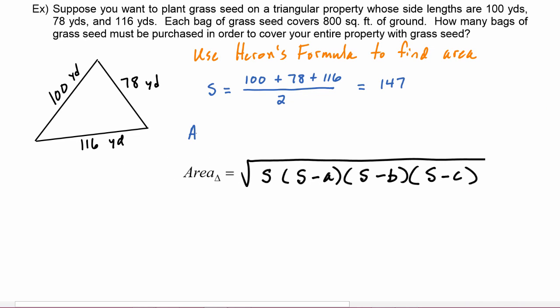Now to find the area of the triangle we will take the square root of the product of those four numbers. So remember we have to take S which is 147, and then we have to take that times S subtracted by each of the sides. So we will do 147 minus 100 and multiply that times 147 minus 78 and multiply that by 147 minus 116.